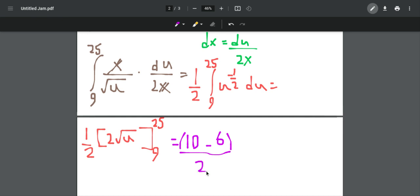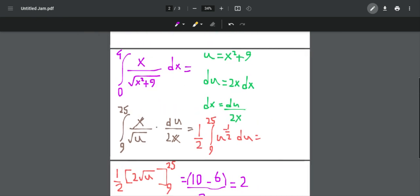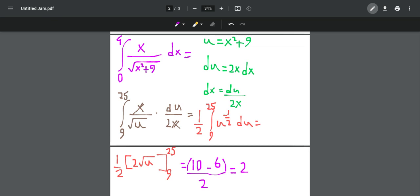But don't forget that we have a 1 half here, so we should divide it by 2. We subtract 10 minus 6 is 4, and 4 divided by 2 is 2. So this whole definite integral just converges to 2.